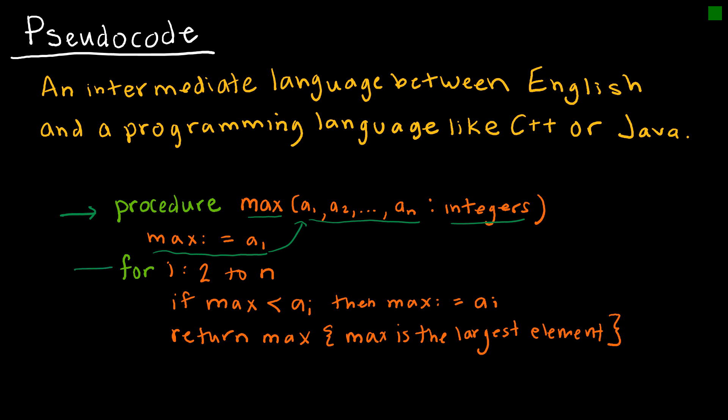Then it says, for all of the other integers, so 2 through n. So for all of these values, if the max is less than a_i, which means if the max is less than our new value, because our new value is a_2, a_3, a_4, etc., then our new max is that value.